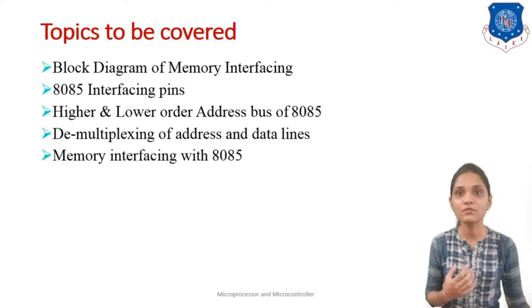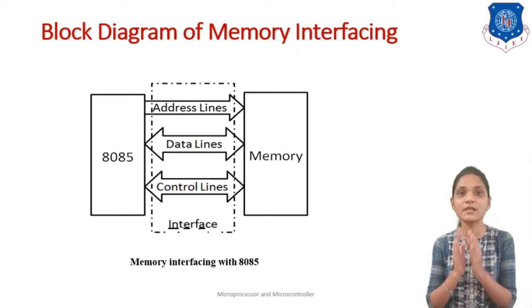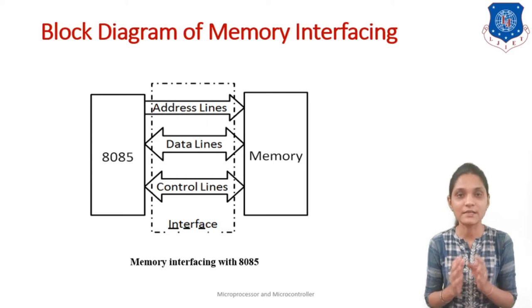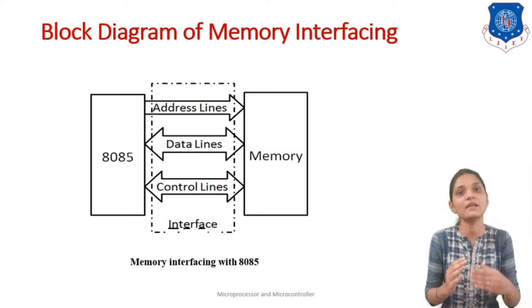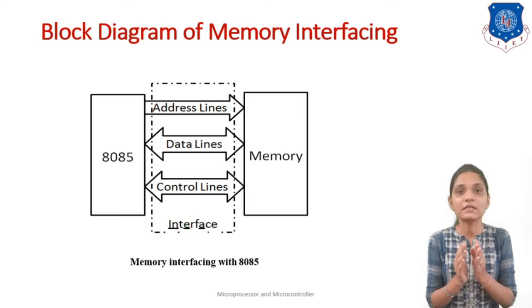Let me start with the first thing, that is the block diagram of memory interfacing. This is the basic block diagram when you want to interface any memory with the 8085. For interfacing purpose you have to connect some lines — that is address bus, data bus, and the control bus. As we know, the address lines are unidirectional, data lines are bi-directional and control lines are also bi-directional. You have to provide some interface that connects all three of these with the 8085 as well as the memory.